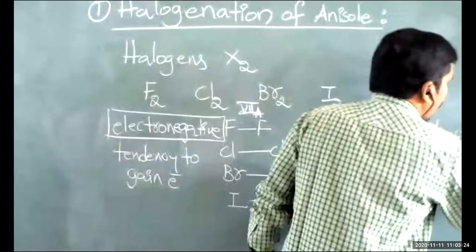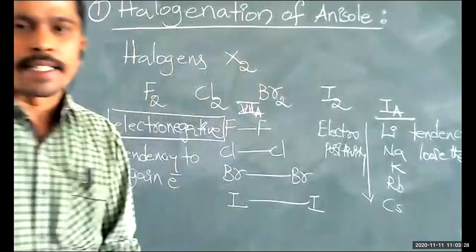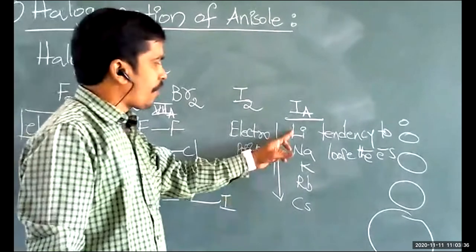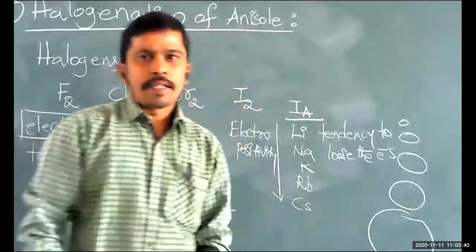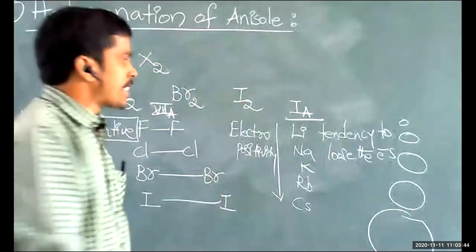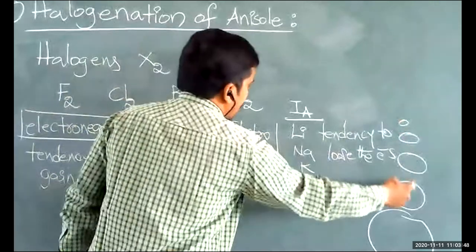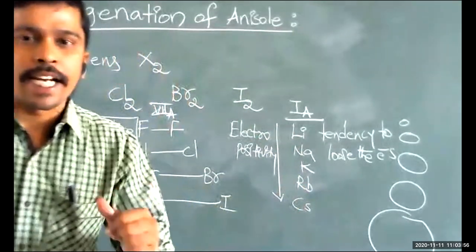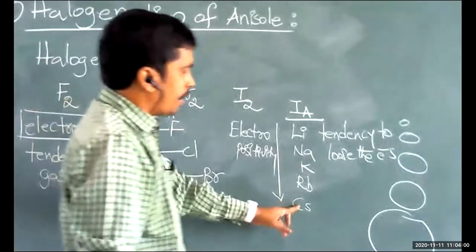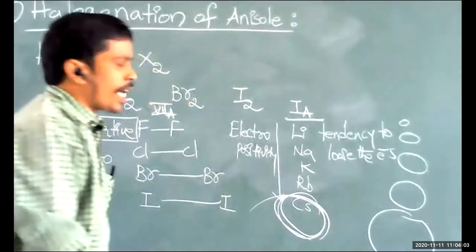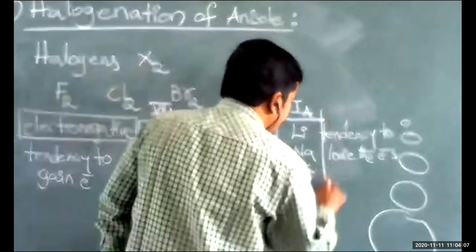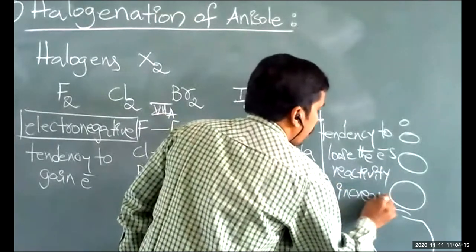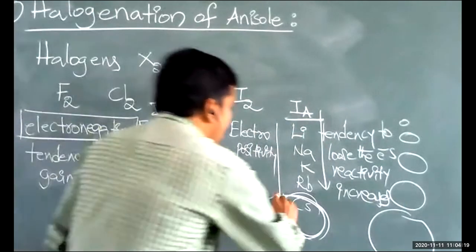In a group from top to bottom, atomic size increases. For 1st A group elements, as atomic size increases from lithium to cesium, the tendency to lose electrons increases. So cesium is the most reactive among 1st A group elements — reactivity increases down the group.